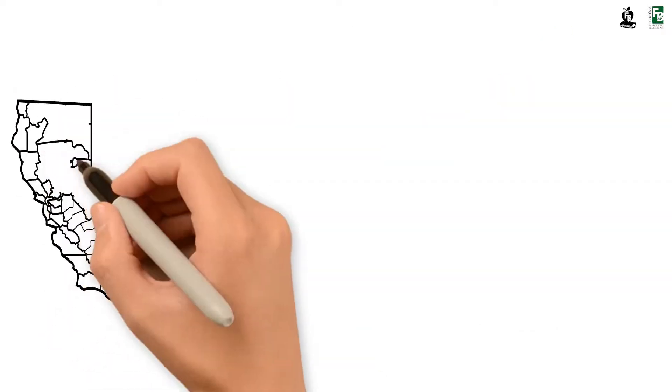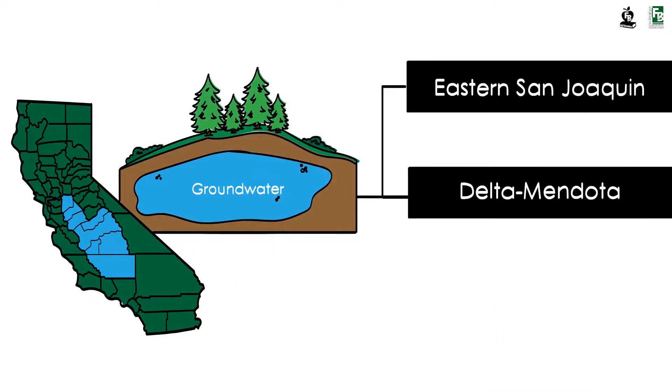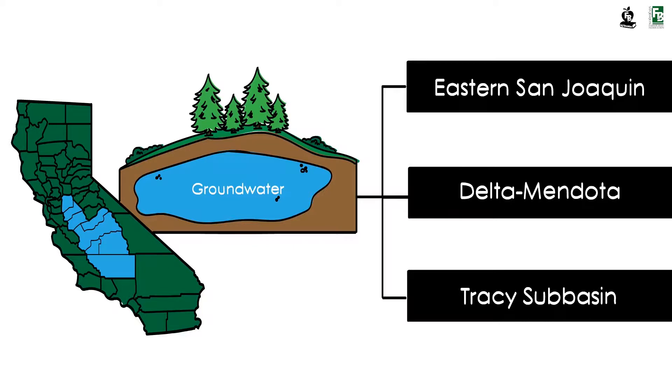San Joaquin County groundwater is stored in three sub-basins, called the Eastern San Joaquin, Delta Mendota, and the Tracy sub-basins.